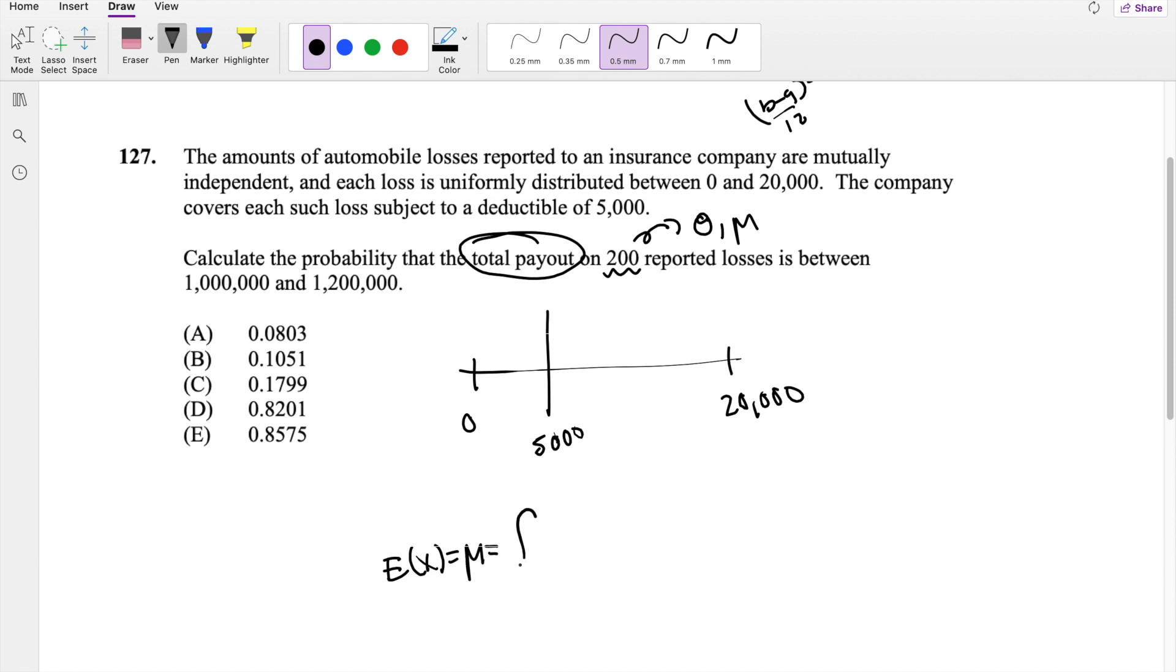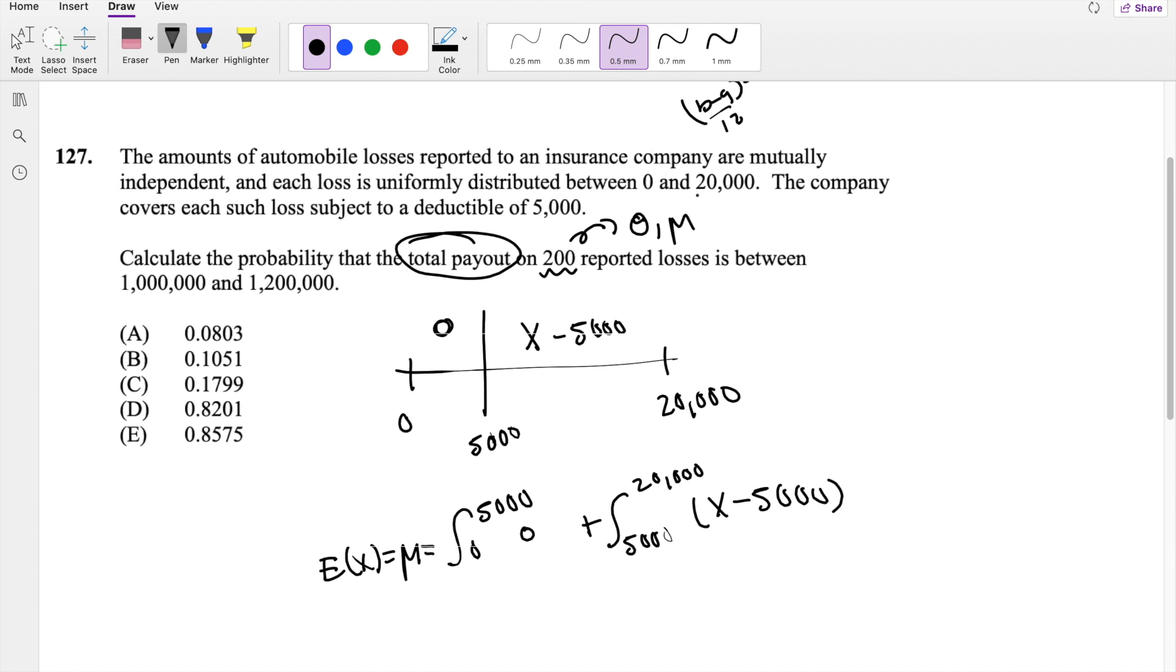What would be the mean or expected value for a total payout? Well, that's going to be from 0 to 5,000, the insurance company payout is going to be 0. But then from 5,000 to 20,000, the payout is going to be whatever the loss is, X minus the deductible, which is 5,000. So that's X minus 5,000.